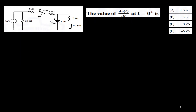Consider this problem. We need to find out the derivative of V(t) at t equal to 0 plus, just after switching. To get this, we will use the previous concept: capacitor voltage is continuous even after switching, and inductor current is continuous even after switching. So the basic concept is Vc(0⁻) equals Vc(0⁺), and iL(0⁻) equals iL(0⁺).